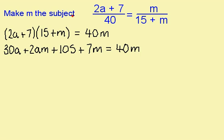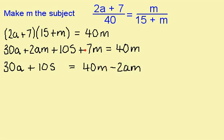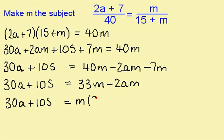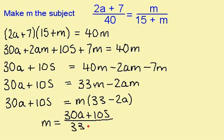Because I want to make m the subject of the equation, I need to get all the m's on one side and everything else on the other side. So I'm going to have 30a plus 105 equal to 40m minus 2am minus 7m. I can now simplify this: 30a plus 105 equals 33m minus 2am. I'm now going to factorise this, taking out a factor of m, leaving me with 33 minus 2a. Finally, to get m, I need to have this divided by this. So m equals 30a plus 105 divided by 33 minus 2a.